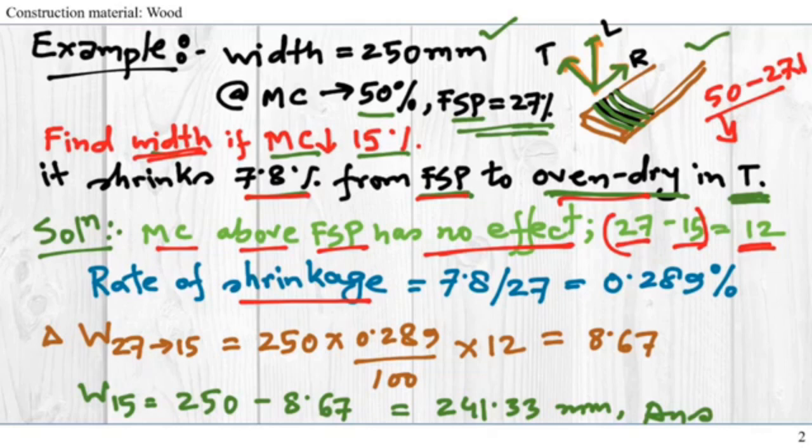So we get the rate of change is 7.8 divided by 27, which equals 0.289% drop per moisture content drop. So what would be the total drop when we have a moisture content drop? What would be the change in width if our moisture content drops from 27 to 15%?